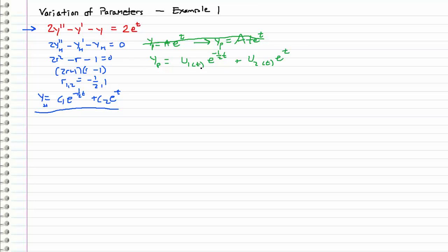This should remind you of the reduction of order we used several videos ago, but this is like reduction of order on steroids because we have both u1 and u2. The cool thing about variation of parameters is that not only do we not have to worry about assuming the right particular solution form, but it also works for a larger class of non-homogeneous equations. With undetermined coefficients we could only handle exponentials, sines and cosines, and polynomials, but with variation of parameters we can handle a lot more.